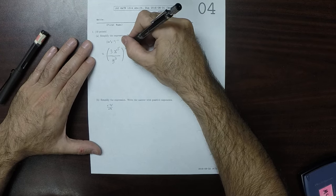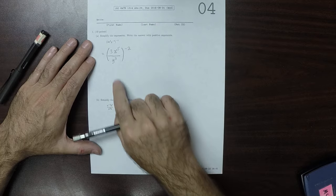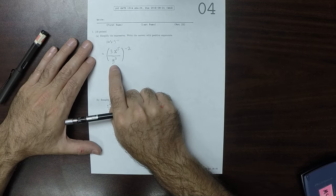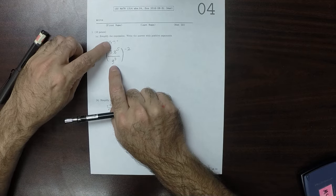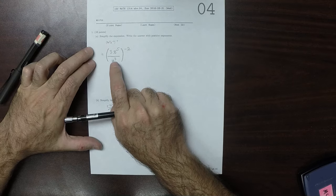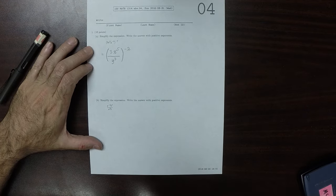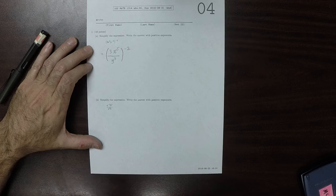So, what that is doing is that moves this y to negative 3 to a denominator. So, that y now has a positive exponent in exchange for moving it to the denominator.